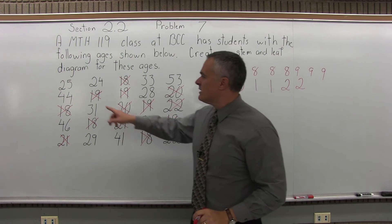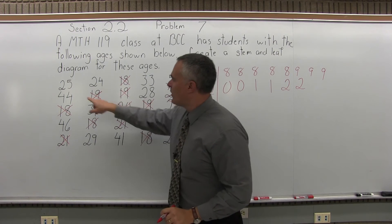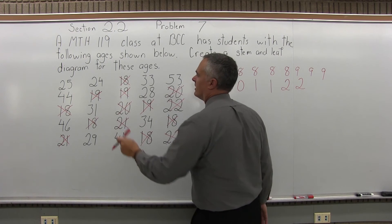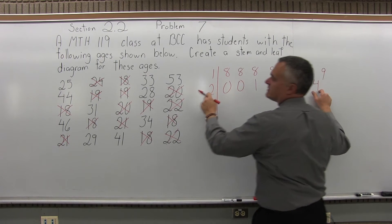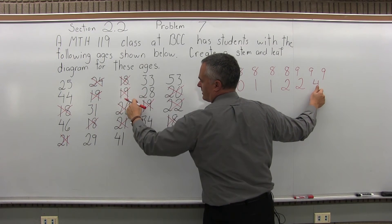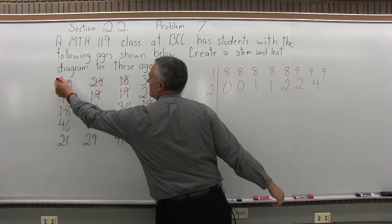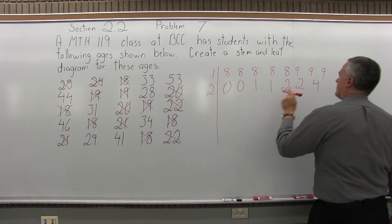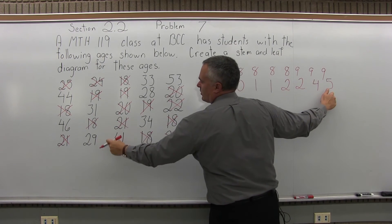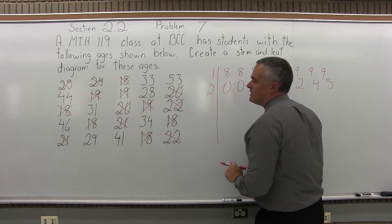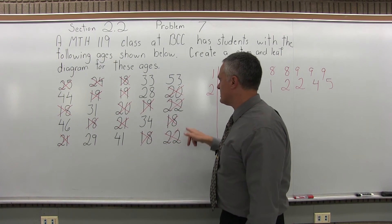Now next would be 23. Any students that are 23? No. 24? Yes, there is one that's 24. I'm still in the line for the 20s, that was 24. Any more 24s? No. So next would be 25. I do have a 25 right there. The 2 in that 25 is accounted for here, they call it the stem. The 5 is what they call the leaf. That's the name, stem and leaf diagram. Any more 25s? No. Next would be 26. Any students in this Math 119 class that are 26 years old? No.